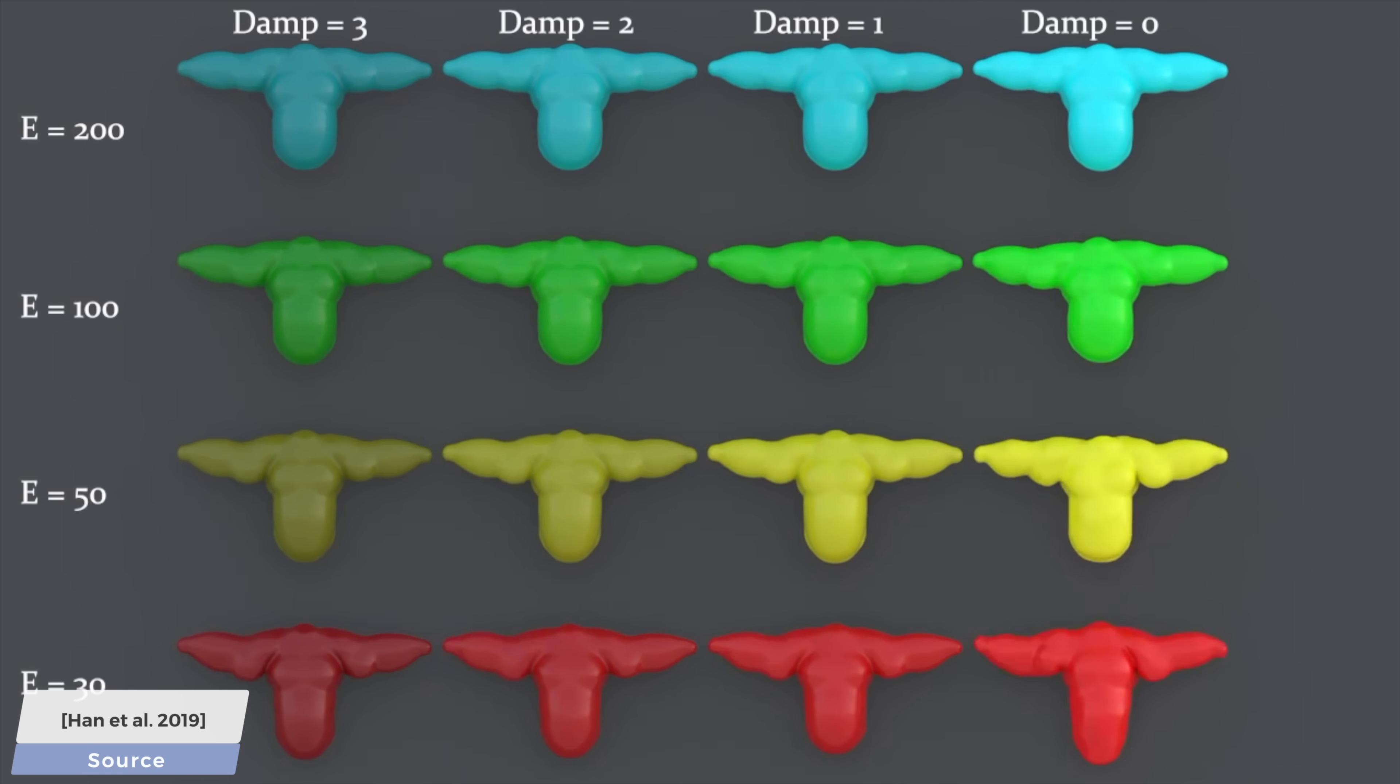As we go from bottom to top, you can see the effect of the stiffness parameters, or the difference. In other words, the higher we are, the stiffer things become, and as we go from left to right, the effect of damping increases.